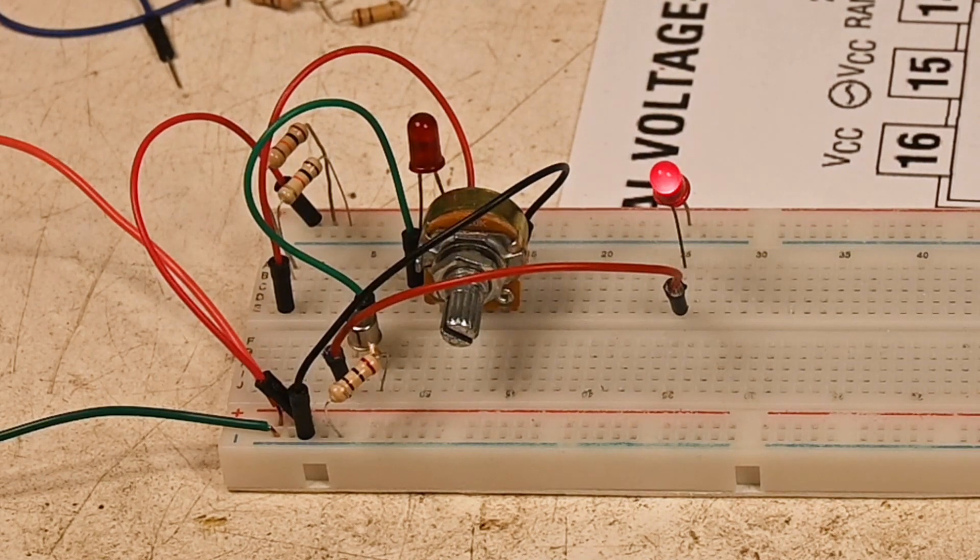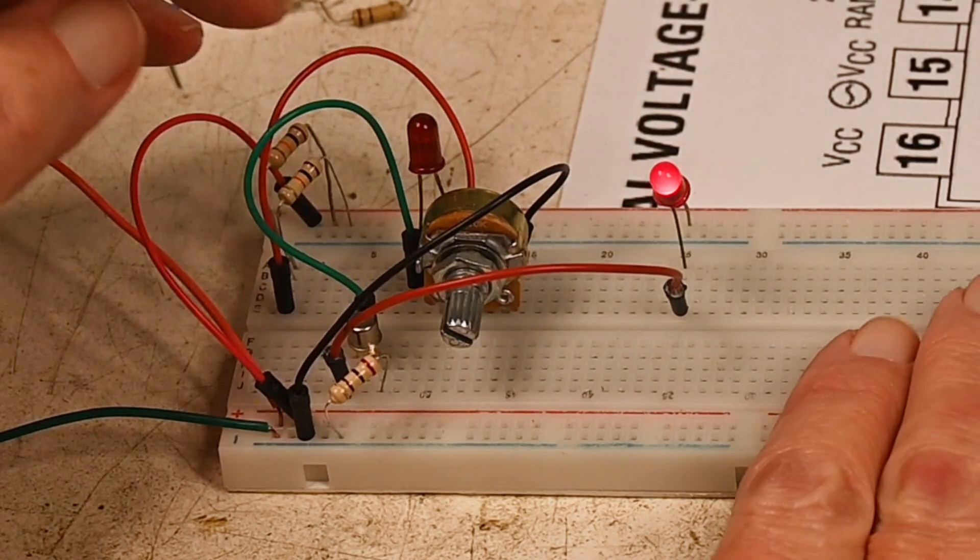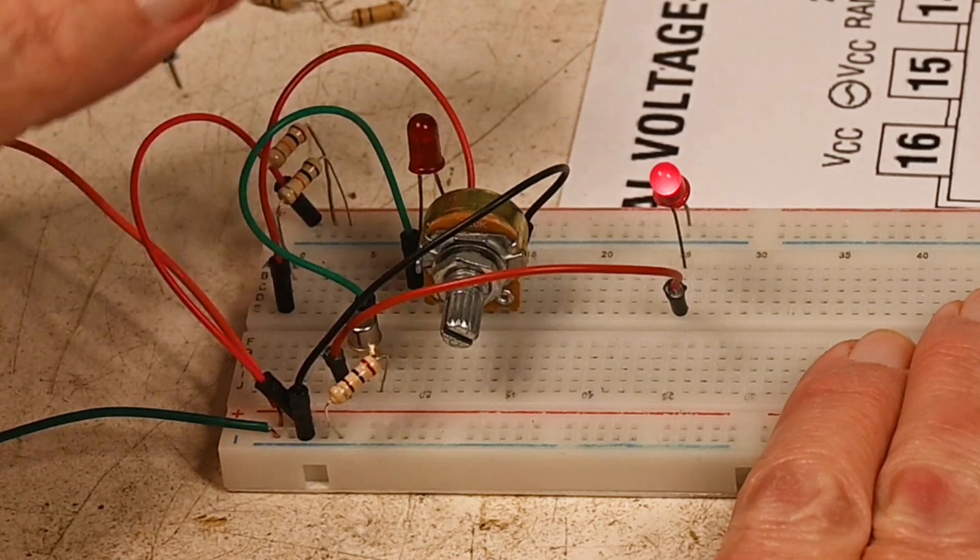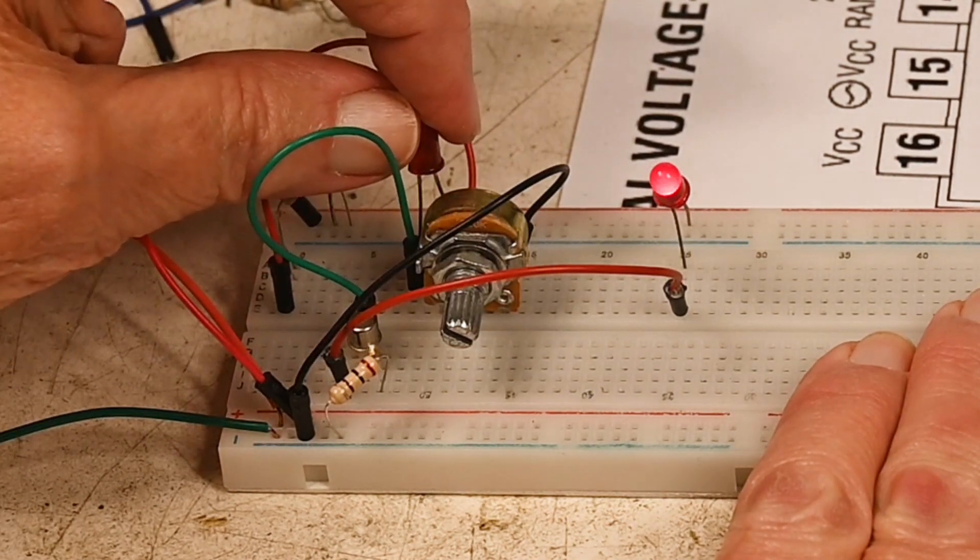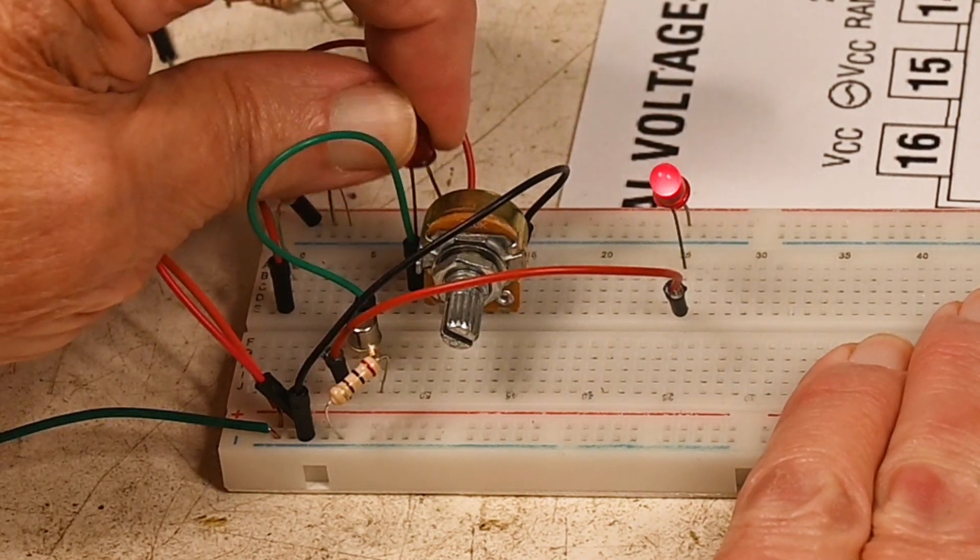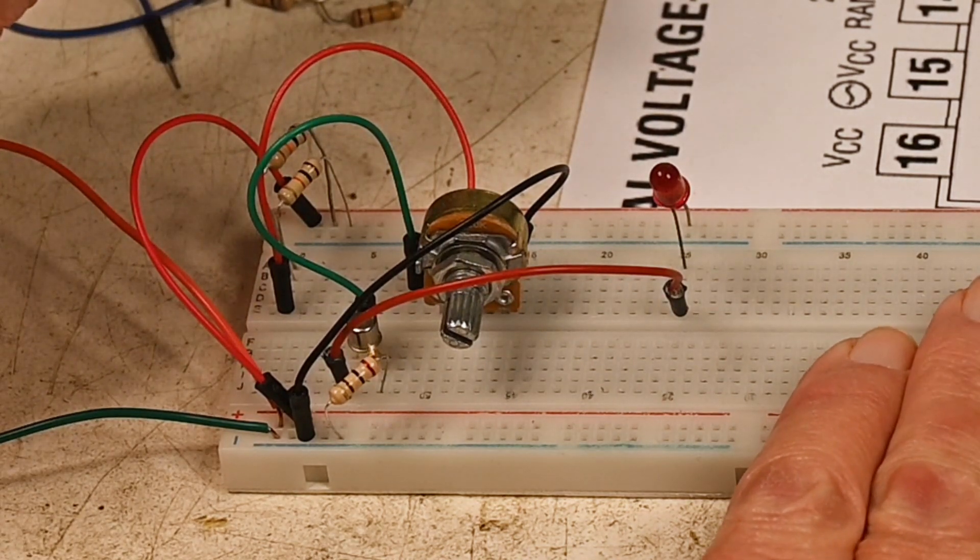The green wire goes to the base. And if I pull out this LED, the circuit stops working.